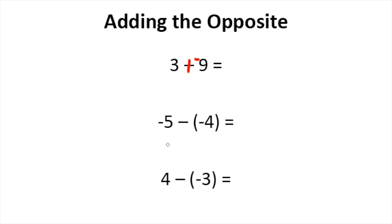Going on to the second example, we have a negative 5 minus a negative 4. So same thing, we're going to add the opposite. So change subtraction to addition, and the opposite of a negative 4 is a positive 4. So now we have negative 5 plus a positive 4.